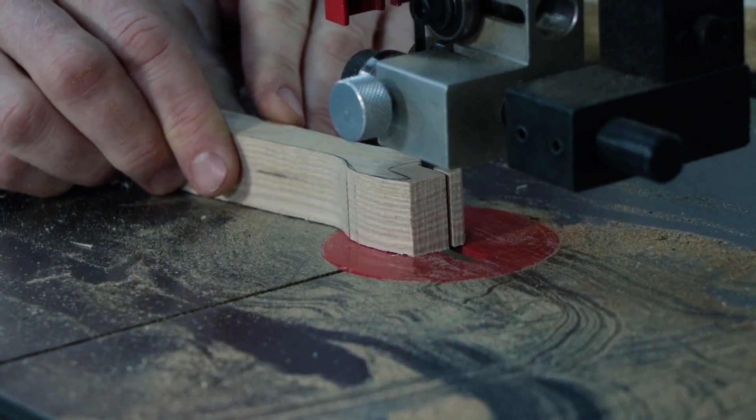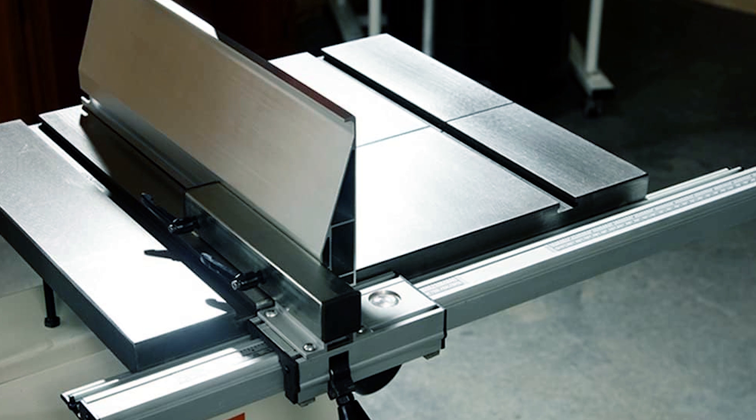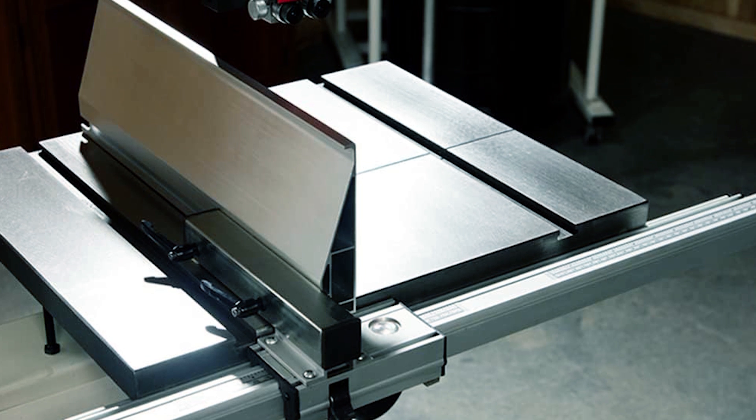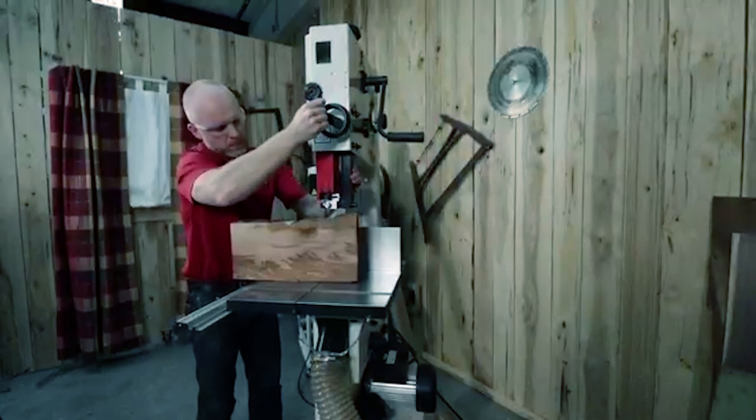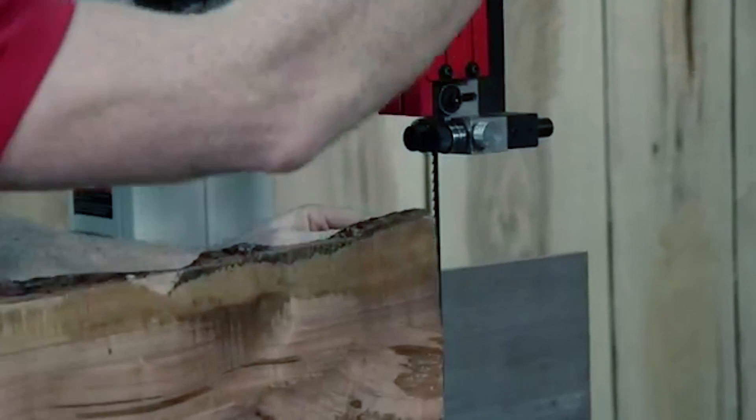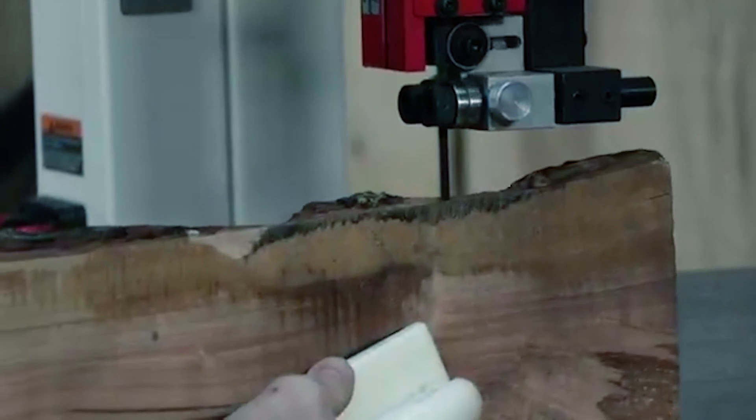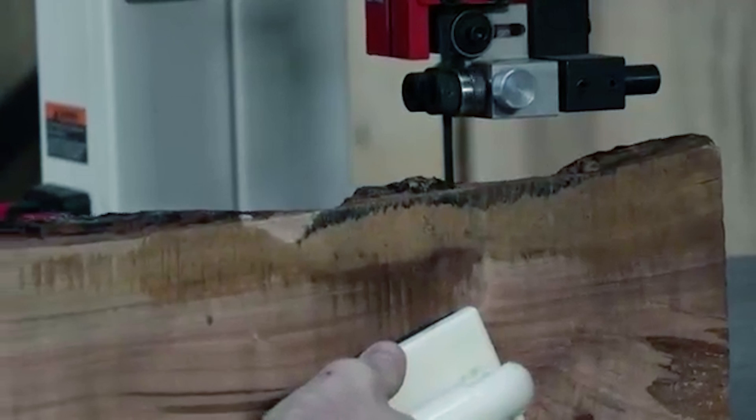Jet's adjustable blade guide system, dual 4-inch dust ports, and robust steel construction ensure efficient and durable performance. Conveniently located controls, including the blade tensioning wheel, enhance user experience. Backed by a 5-year warranty, it combines reliability, visibility, and workspace to meet the demands of woodworking projects.